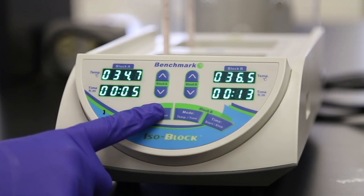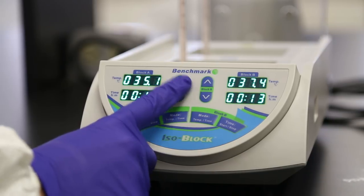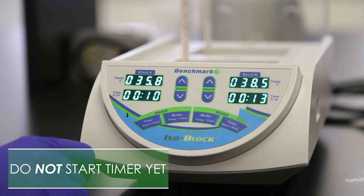The last digit of the selected setting will flash. Note, the display includes hours and minutes. Using the Block A arrow keys, press and hold the up or down to set the timer to 10 minutes. Don't start the timer yet.